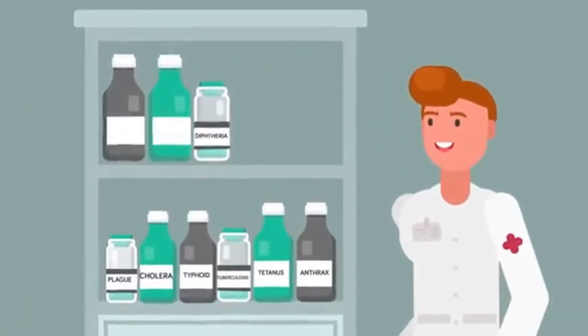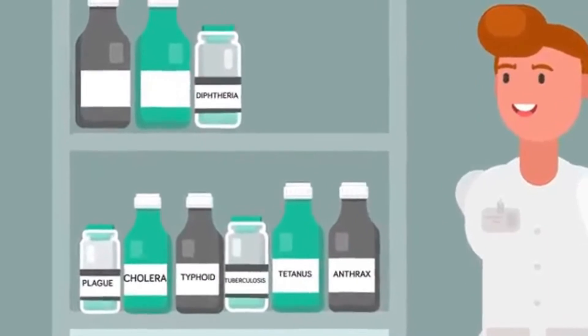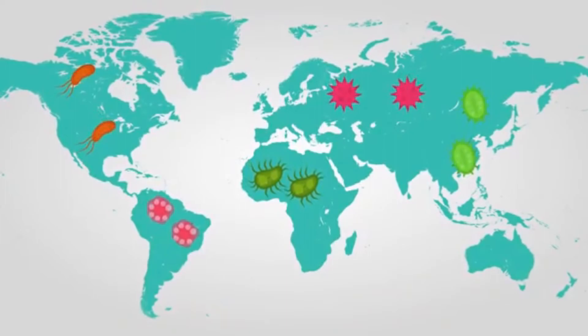Antitoxins and vaccines against diphtheria, tetanus, anthrax, cholera, plague, typhoid, tuberculosis, and more were developed through the 1930s.